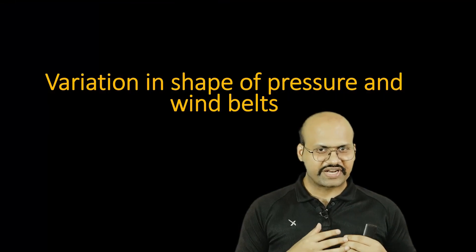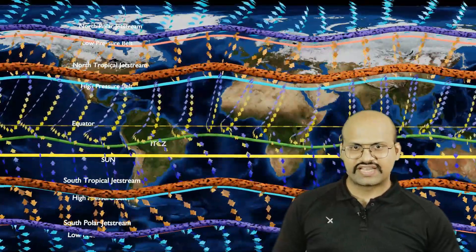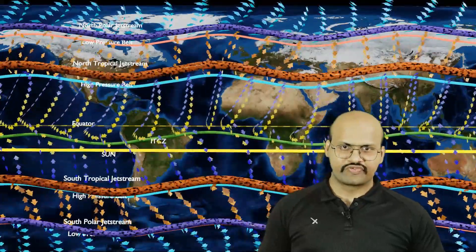Now, variation in shape of pressure belts and wind belts. When we were discussing, we considered these belts to be a straight line, but that is not actually true. In reality, these lines can be bent over some places, they can be stretched over other places. We can see over here that there is deformation in all those belts. We can see that the jet stream is not straight. It is bent, it is having meanders, even the pressure belts are not straight.